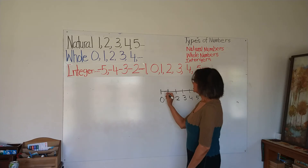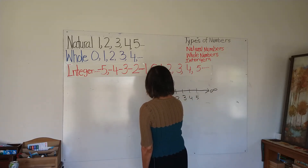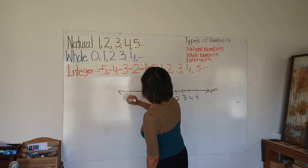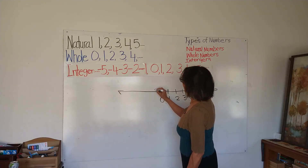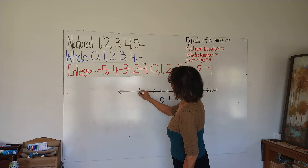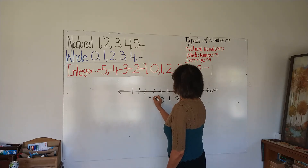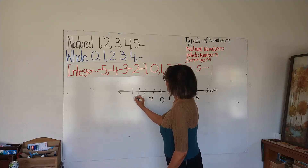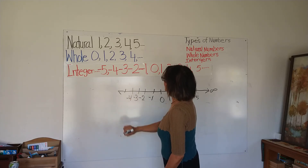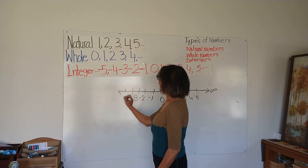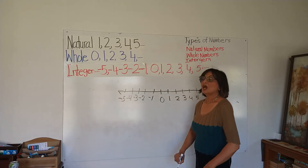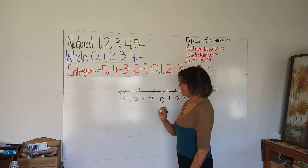I'm going to extend this number line. I'm going to make tick marks: negative one, negative two, negative three, negative four, negative five.